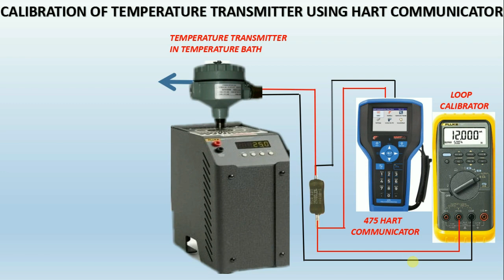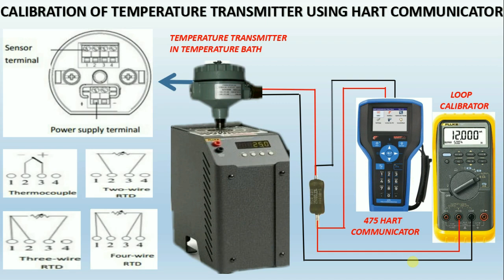Many calibrators can be used both as dry or liquid baths. The temperature element with transmitter is inserted in the temperature bath for calibration. Now we will see how to calibrate a temperature transmitter using HART. Connect the loop power to the temperature transmitter as shown in the elevated view, then connect the temperature element to the transmitter sensor connection terminals, according to the configuration done in HART.